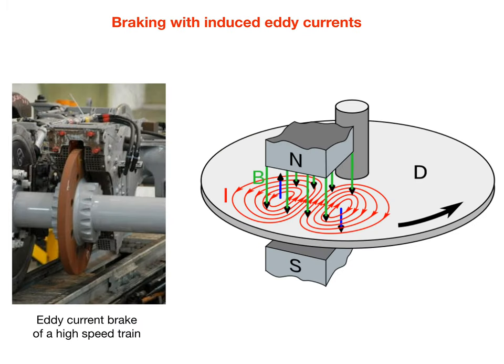The interaction between an original magnetic field and an induced magnetic field is effectively used in eddy current brakes. An example for a high-speed train is shown in the photograph. A metallic disc attached to the wheel moves at high speed through an electromagnet that produces a magnetic field directed downward, as indicated in green. Eddy currents are induced — clockwise on the right and anti-clockwise on the left. The repulsive and attractive forces between the induced magnetic fields and the original magnetic field have components that decelerate the motion of the disc.